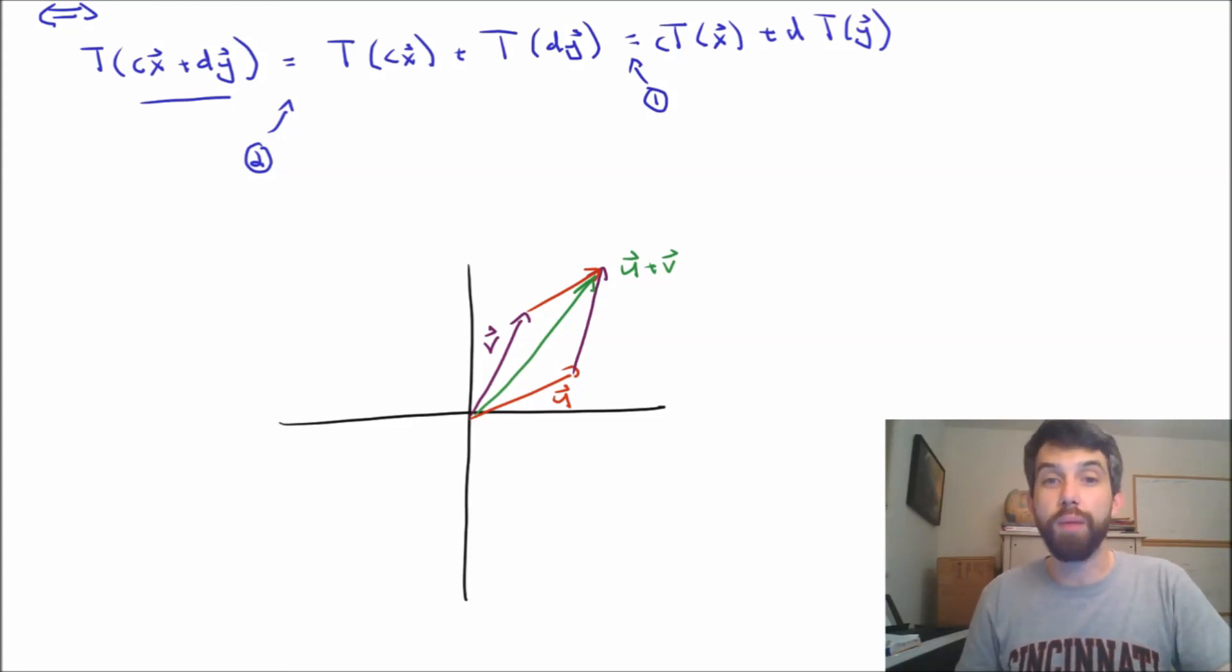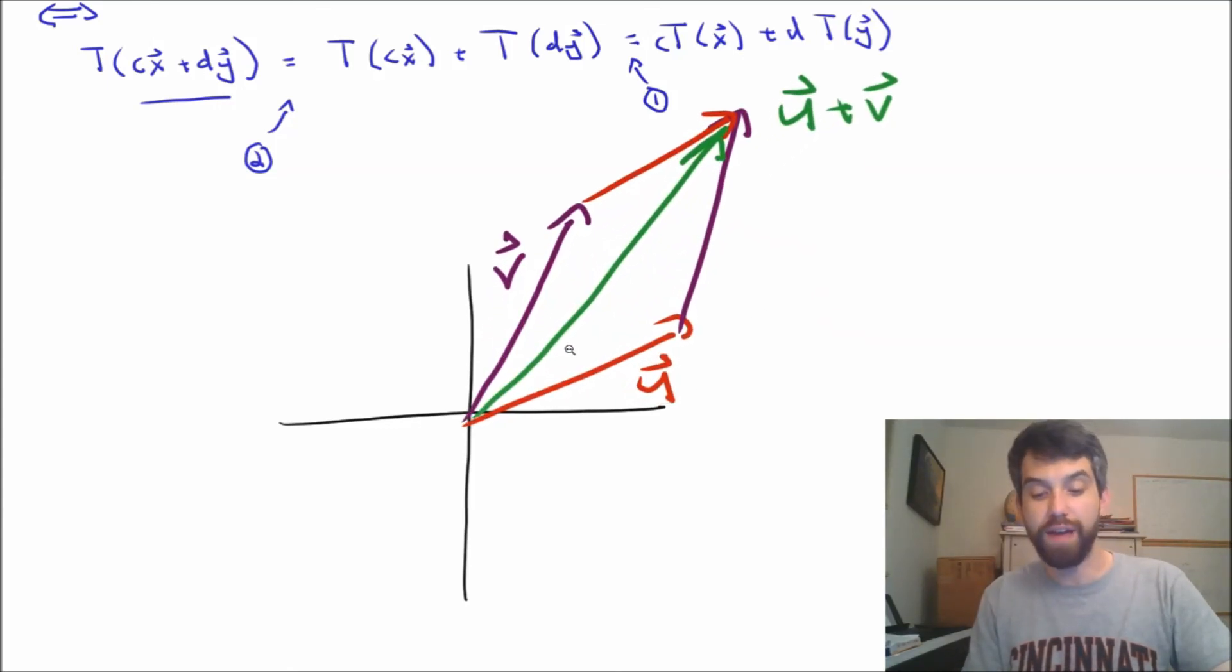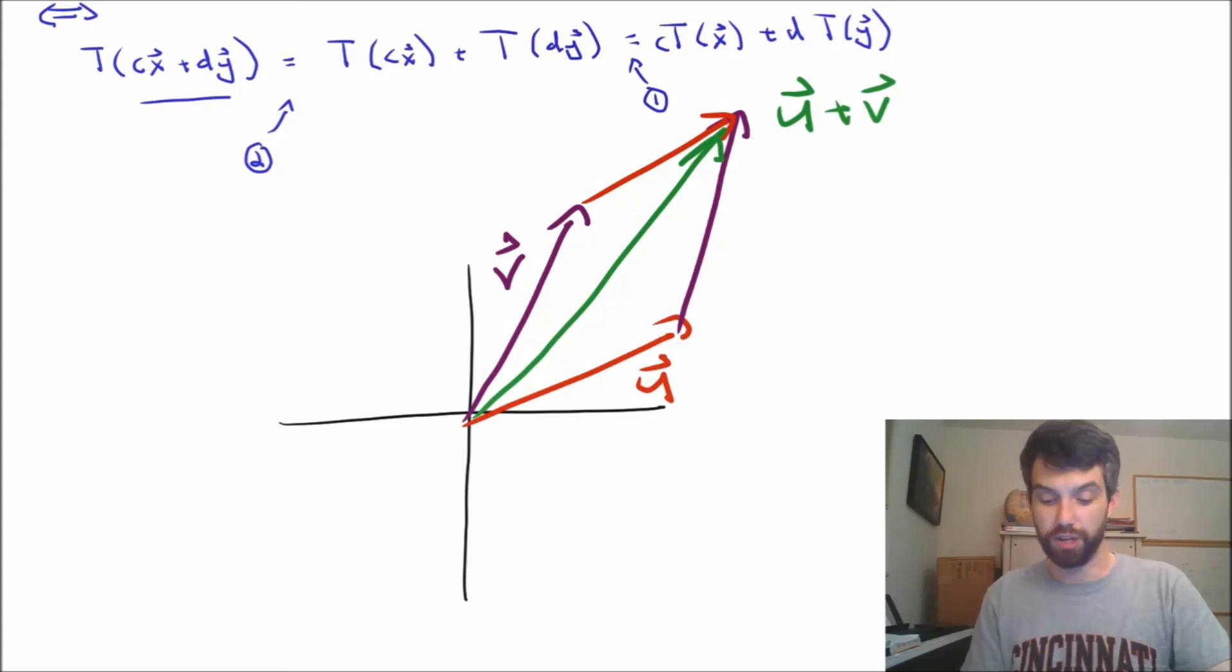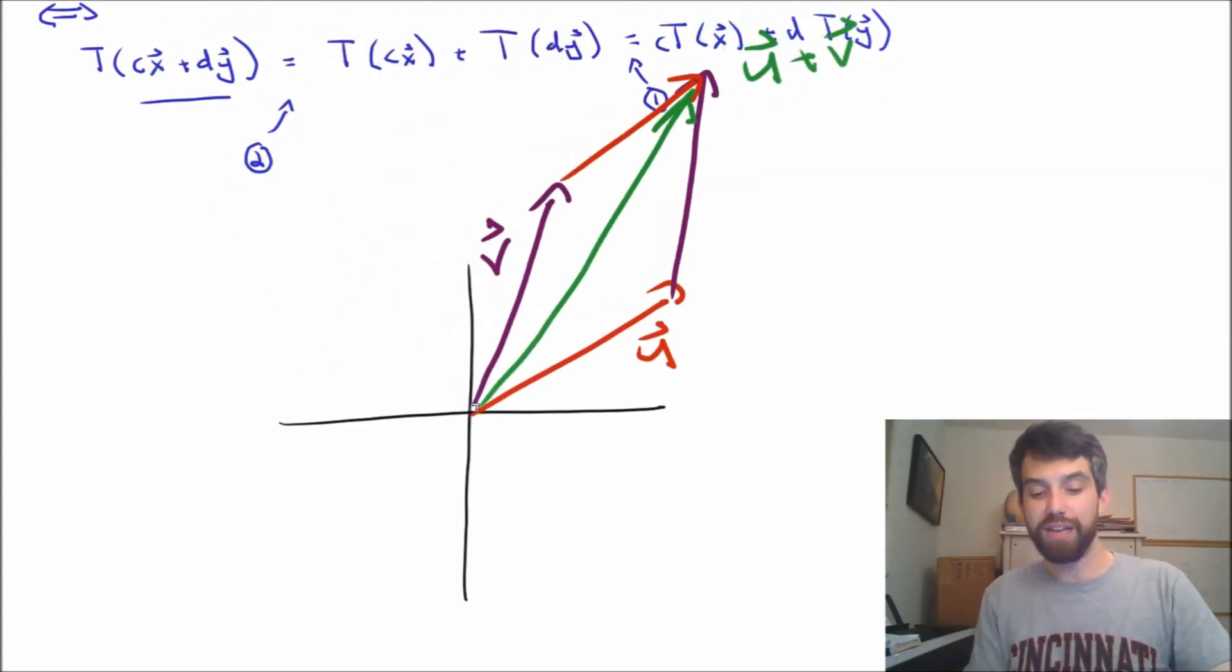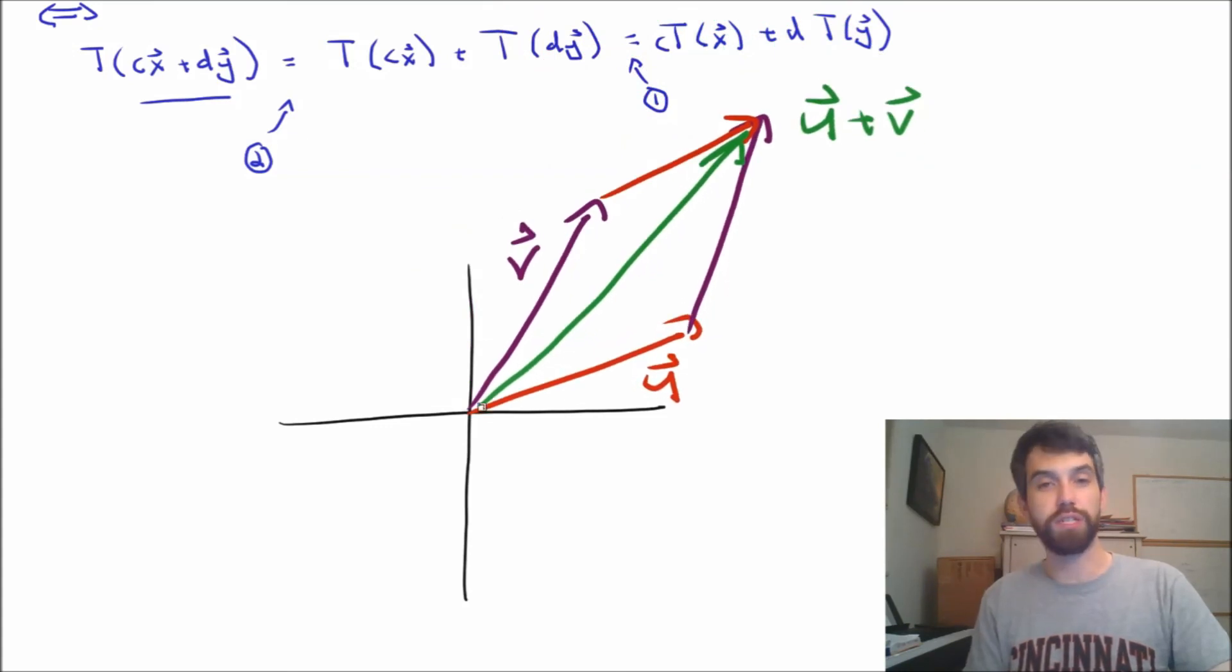You might say, well, hold on. What about if I scale it? What if I stretch it? Well, okay, that's fine. I could go and I could multiply all my vectors by some scalar. They're going to look something like that. And then I can rotate them around just the same. So, if I scale them by a constant first and then rotate it, it respects that as well. So, indeed, what we have is that rotation is a linear transformation.